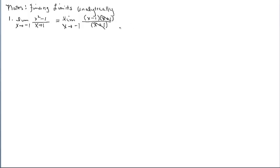At this point it's probably going to be a point discontinuity — a hole in the graph. Now we can plug in negative 1 for x, and what you're actually getting is the y-coordinate of the hole on the graph. Plugging in negative 1 and subtracting another 1, our answer is going to be negative 2.